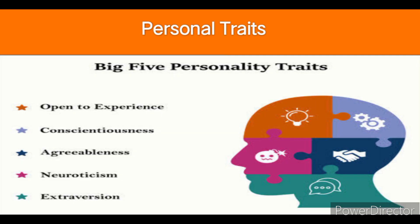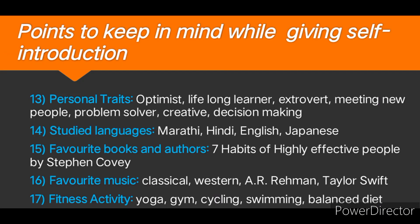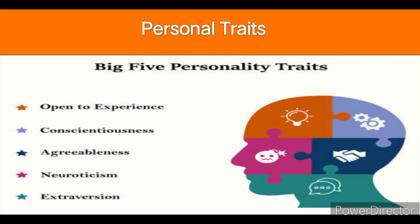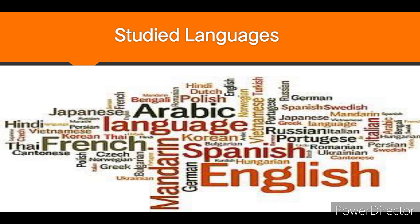Point number thirteen will be about our own personal qualities that we have. For example: optimist, lifelong learner, extrovert, meeting new people, problem solver, creative and decision making. It is going to create a good kind of rapport between the speaker and the listener while giving our own introduction. Point number fourteen will be studied languages. Here it is going to show to the listener whether we are multilingual or not. For example: Marathi, Hindi, English, Japanese, French.